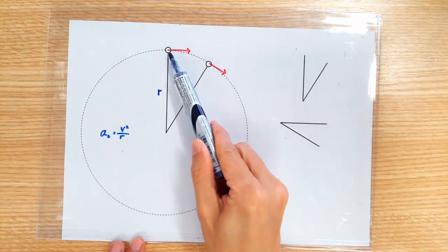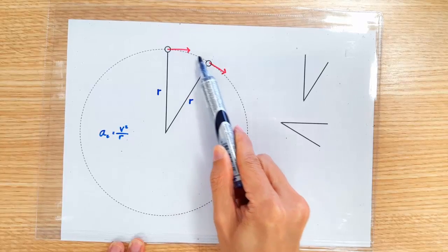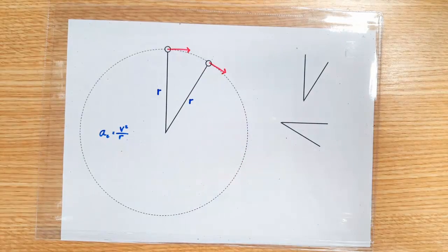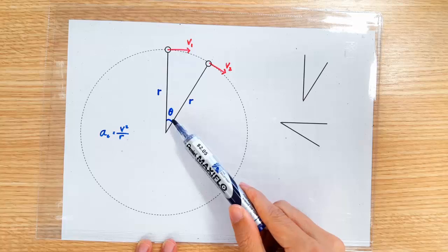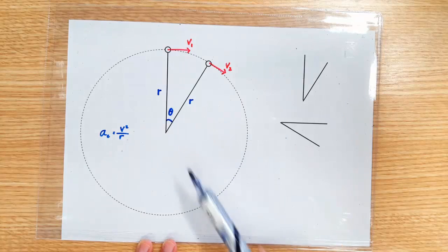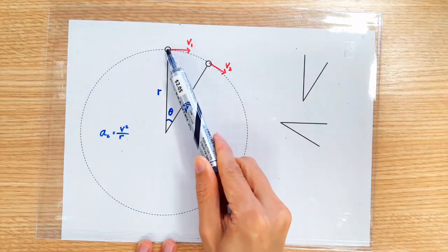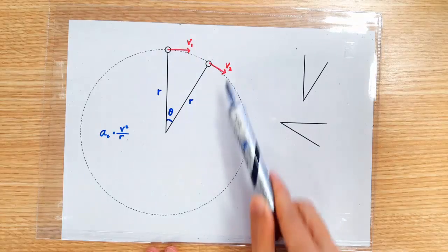Let's have an object moving along a circular arc of radius r. It underwent an angular displacement of theta, and let's call the velocity at this and this position v1 and v2.